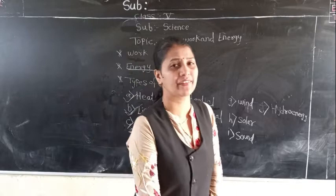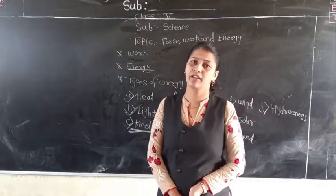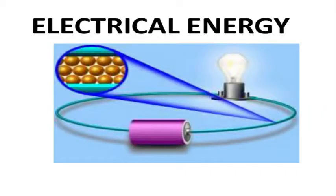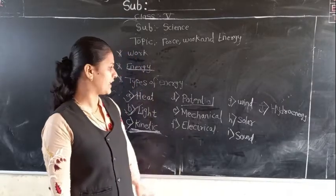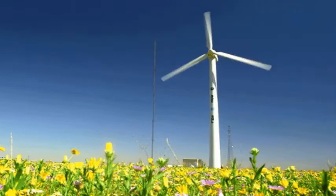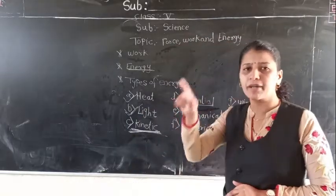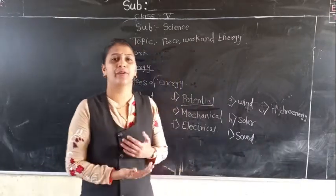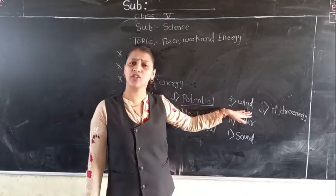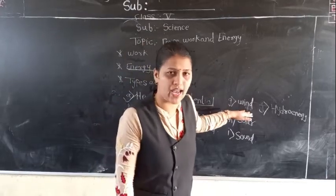Next is electrical energy and wind energy. Wind energy is the energy which we get from the wind. The best example is a windmill. The windmill moves with the help of the wind and produces electrical energy. The energy which we get from wind is called wind energy.